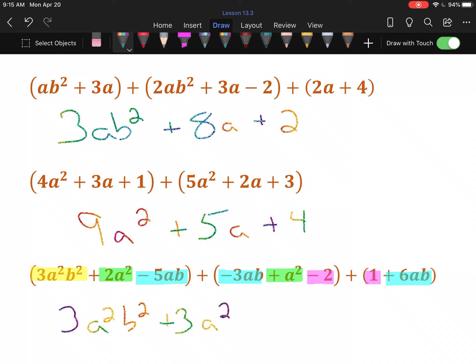Next up would be the ab. We have -5, minus 3 is -8, plus 6 is minus 2 of those. So minus 2ab's. And then we have the number by itself. -2 and 1 is -1.